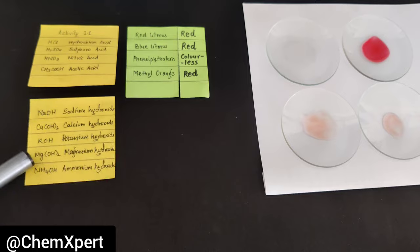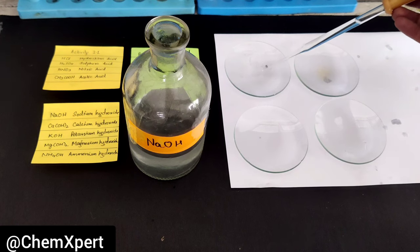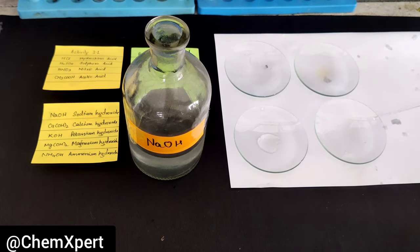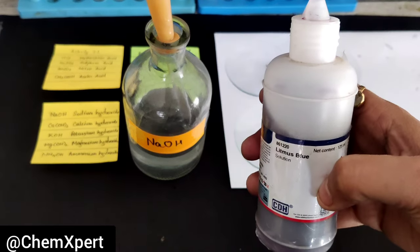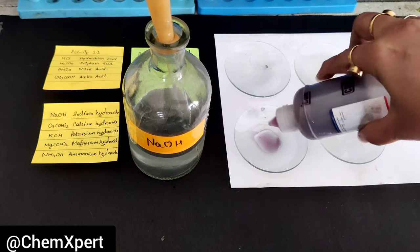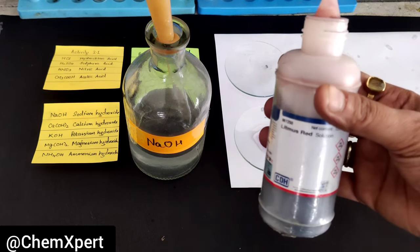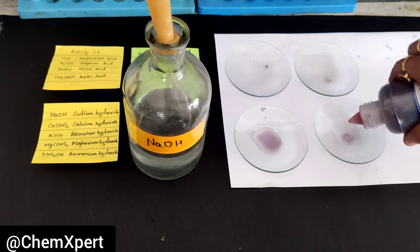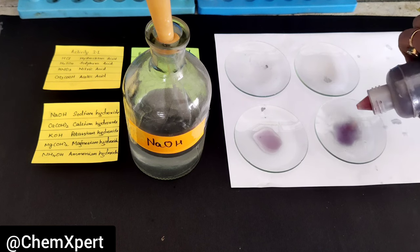So now we move ahead for the bases. The next step is to add base on the watch glasses. I have washed the watch glasses and now I am adding NaOH. I add blue litmus indicator — since it is a base, blue remains blue. Similarly, red litmus changes into blue in color when it touches the base solution.